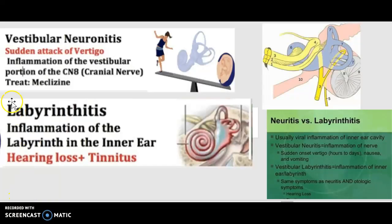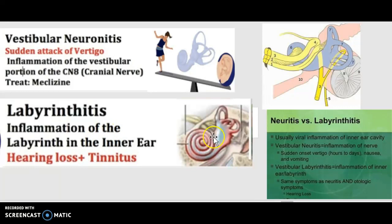Moving on, there is vestibular neuritis and labyrinthitis. Vestibular neuritis is a sudden attack of vertigo and causes inflammation of the vestibular portion of cranial nerve eight. Treatment is meclizine. For labyrinthitis, there is inflammation of the labyrinth in the inner ear, which can cause hearing loss and tinnitus.